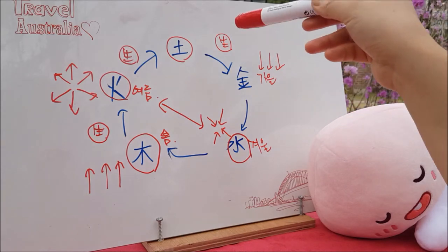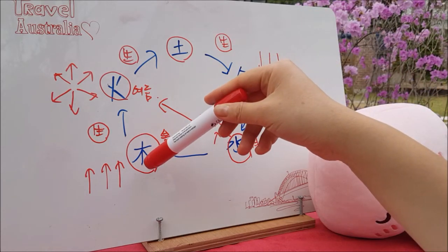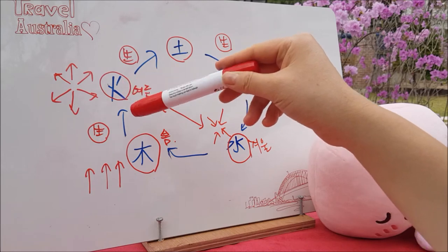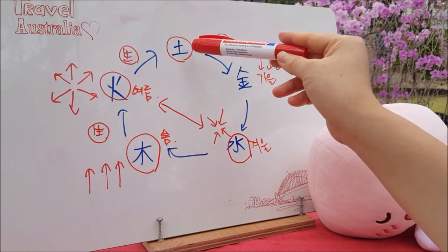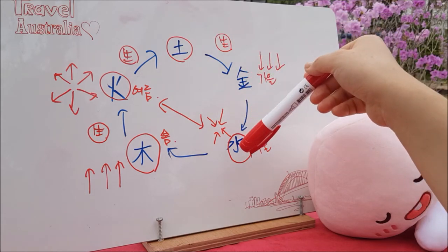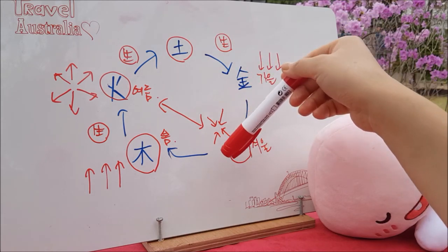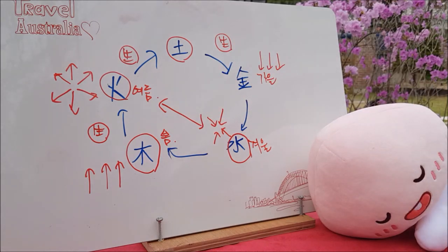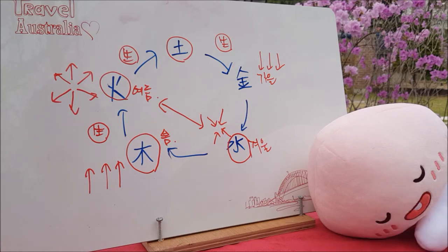다시 한번 정리를 해드리자면, 목은 봄을 뜻하고, 목생화: 목은 화를 생하고, 화는 토를 생하며, 토는 금을 생하고, 금은 수를 생합니다. 그리고 수는 목을 생하게 됩니다. 이렇게 에너지는 돌아갑니다. 저희는 기의 흐름을 보는 공부를 명리를 통해서 하고 있고요. 이 오행의 상생관계는 기본적으로 알고 계셔야 됩니다. 시간은 멈추지 않죠. 오행도 마찬가지입니다. 오행은 돌고 돕니다.